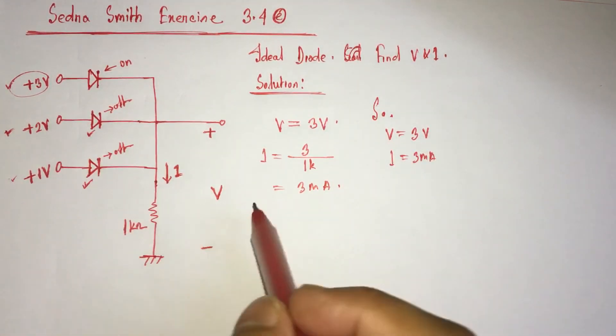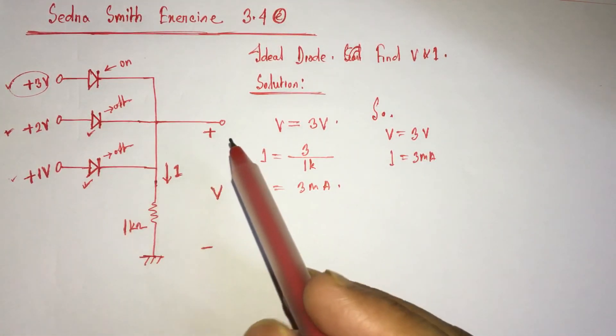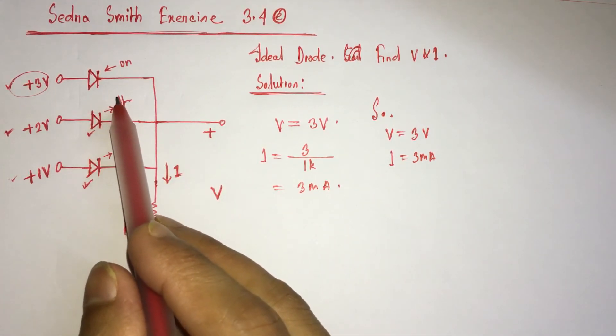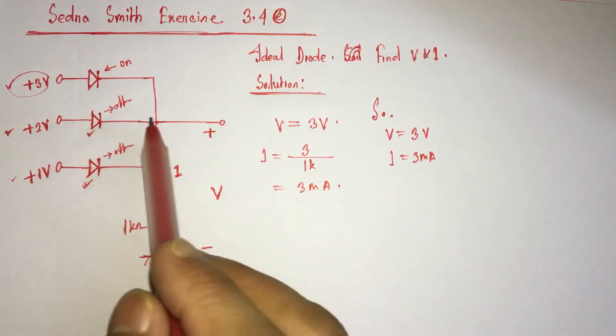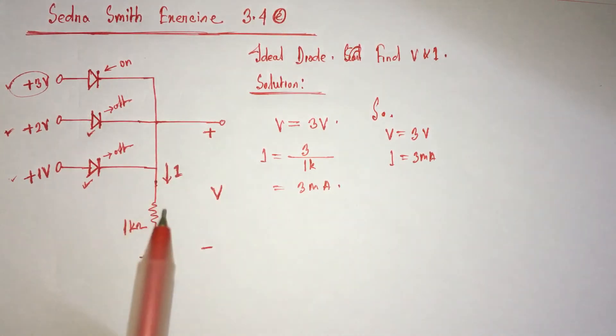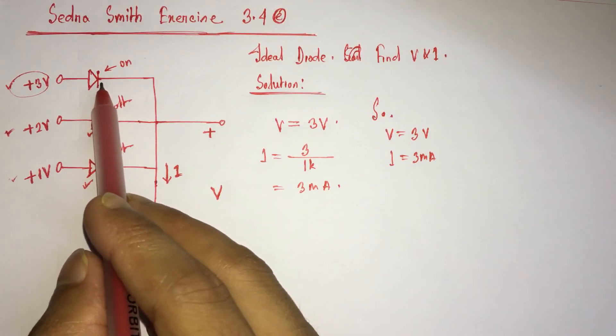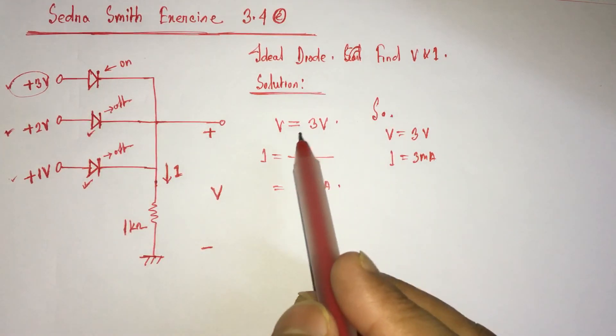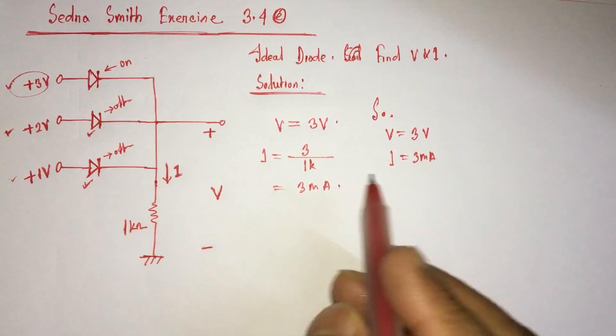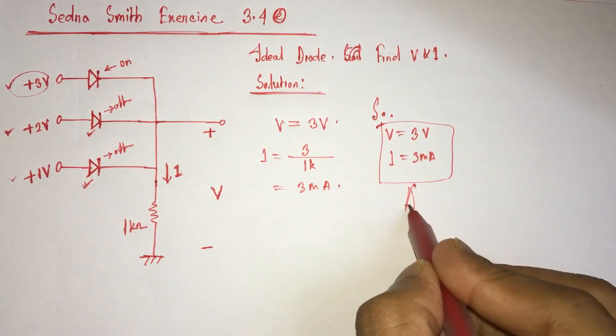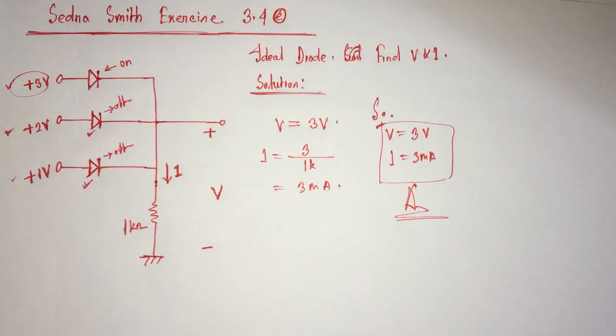For solving this type of problem, determining the state of the diode and which diode is conducting is vital. If we can determine the diode which is conducting, then it is very easy to solve this type of problem. So here V is 3 volt and I equals 3 milliampere. This is the answer. Thank you for watching.